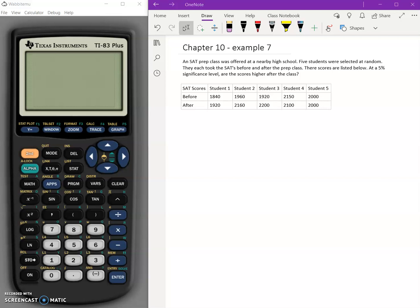Let's take a look at another example of hypothesis testing. Here we have an SAT prep class that was offered at a nearby high school. Five students were selected at random. They each took the SATs before and after the prep class. Their scores are listed below. At a 5% significance level, are the scores higher after the class?